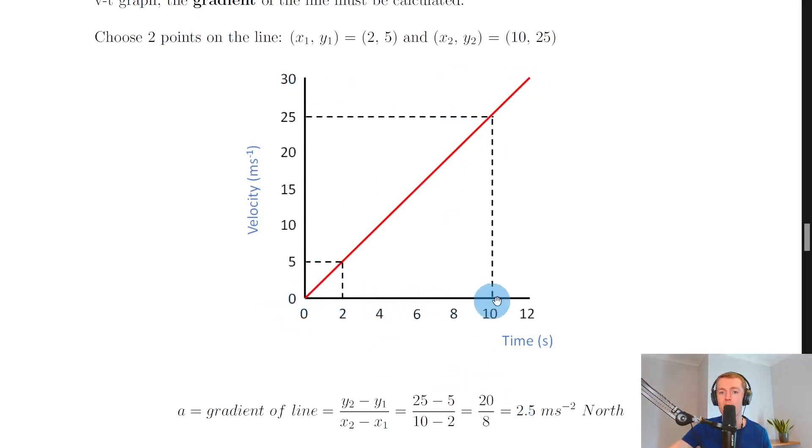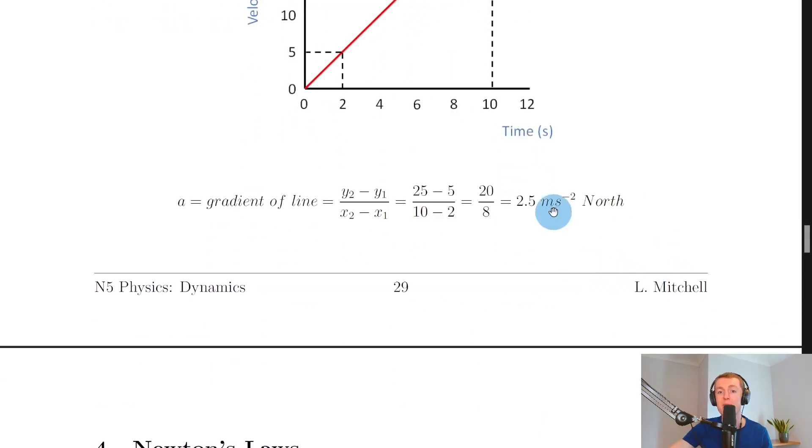I could say that my total time went from here all the way along to 12 seconds. So if I do a equals v minus u over t, I get 30 minus zero divided by 12, and 30 divided by 12 will give me the same answer as 20 divided by 8. So I get 2.5 meters per second squared north again.